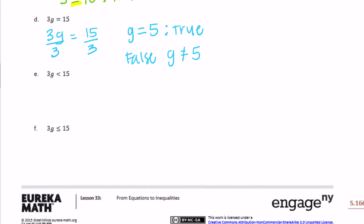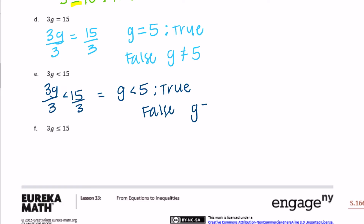Part e: 3g is less than 15. Dividing both sides by 3: g is less than 5. So anything less than 5 makes this true. For it to be false, g would be greater than or equal to 5 — so 5 or greater makes this false.